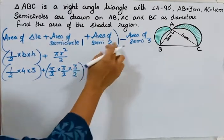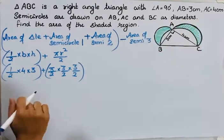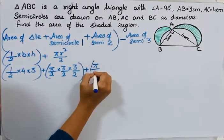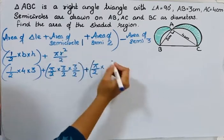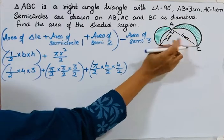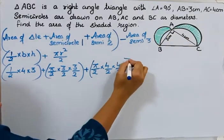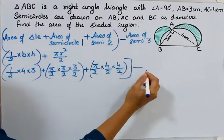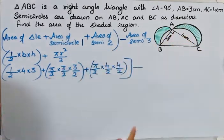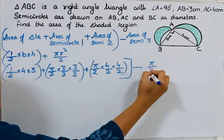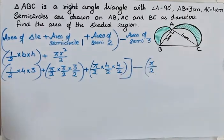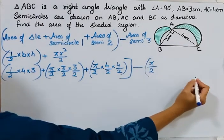Then, semicircle 2: the diameter is 4, so the radius is 4/2, which is 2. The area formula is π/2 times radius squared, with radius 4/2. Then, from this whole thing, we have to subtract semicircle 3, which is the semicircle with BC as diameter. The area formula is π/2 times the radius, and we have to find BC first. What is BC? BC we have to find.